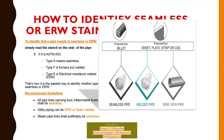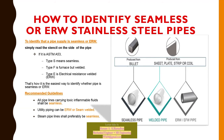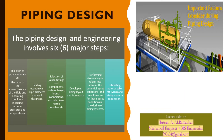To identify whether a pipe is seamless or ERW, simply read the markings on the side of the pipe. For ASTM A53: Type S means seamless, Type F is furnace butt welded, and Type E is electric resistance welded (ERW). Recommended guidelines: all pipelines carrying toxic or flammable fluid shall be seamless; utility piping can be ERW or seamless; steam pipelines shall preferably be seamless.